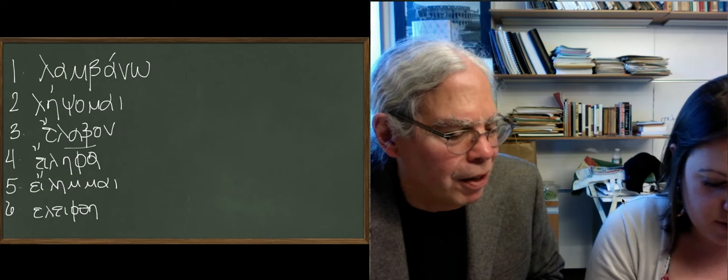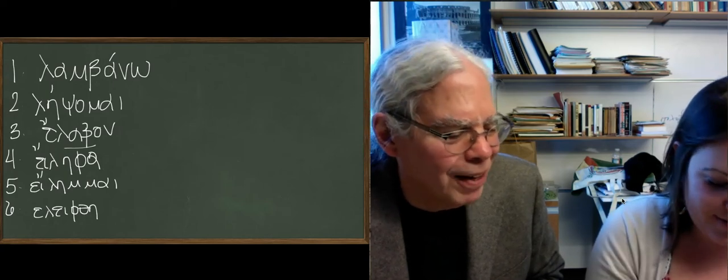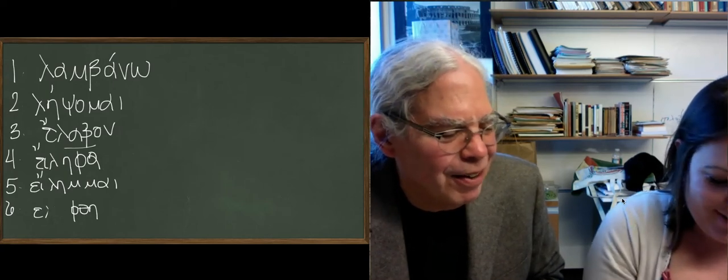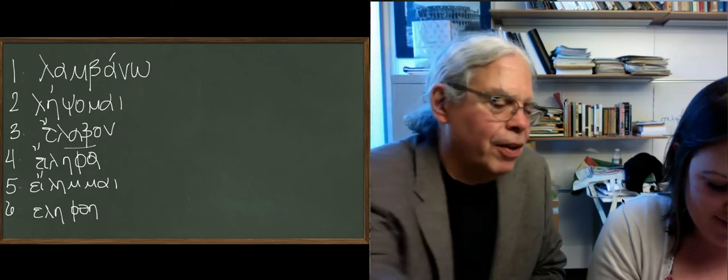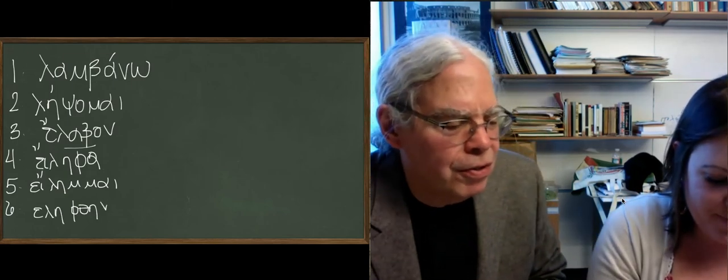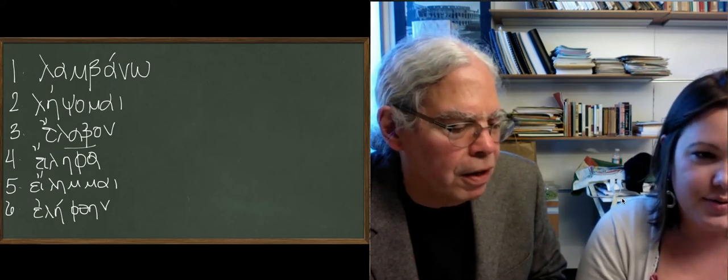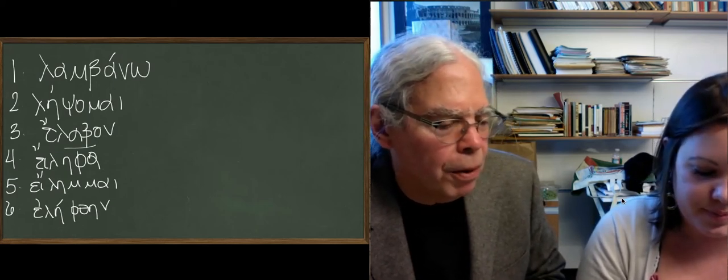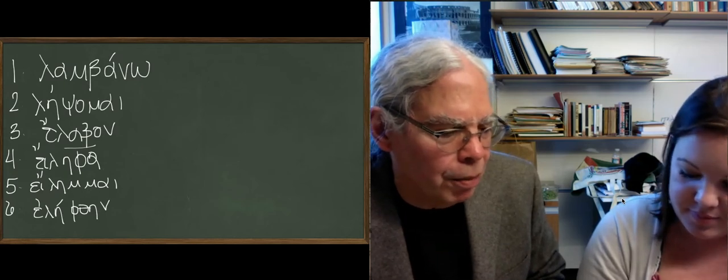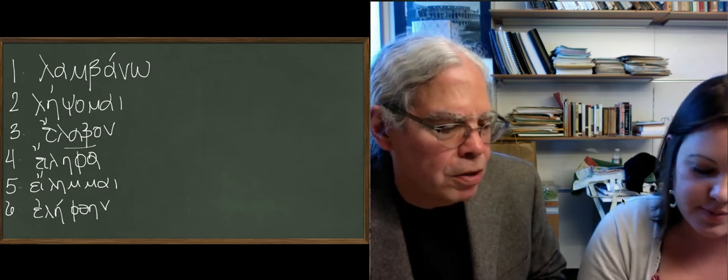And then elemi, with two omegas, is the perfect middle or passive. And elefthane, again, elef root, with an eta. Not an epsilon iota, but an eta in the stem. So you can see the lef, there's a consistency. The lef root gives you lepsomai, and elefa, elemi, and elefthane, lambda, eta, phi.